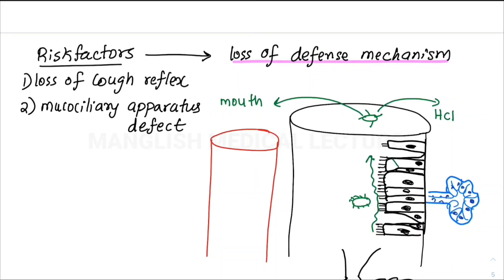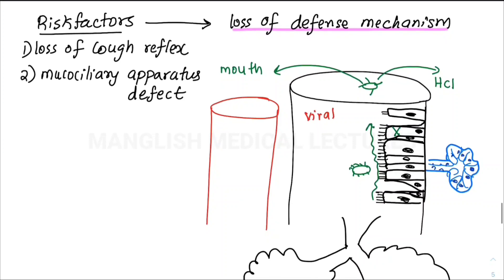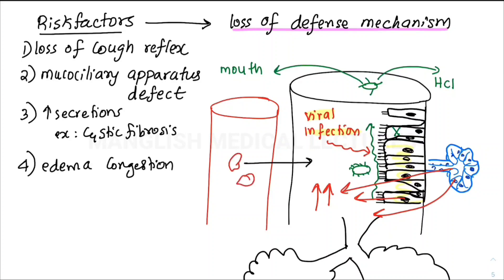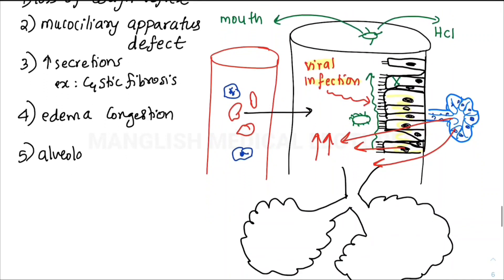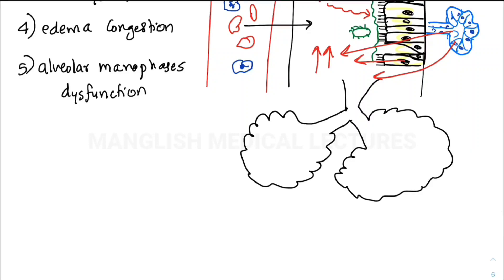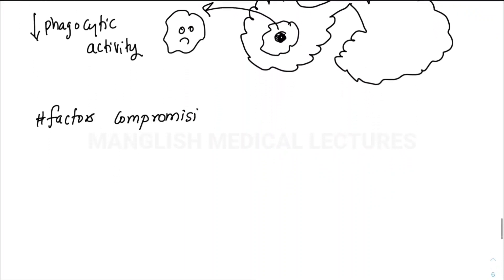In viral infection, the virus can shed the respiratory epithelium and ciliary dysfunction can occur. You can lose this mucus ciliary protective mechanism. Number three, increased secretions—for example in cystic fibrosis. Number four, edema and congestion where RBCs and neutrophils come out to the alveolar space. Fifth is alveolar macrophage dysfunction—there is a drop in phagocytic activity of alveolar macrophages.